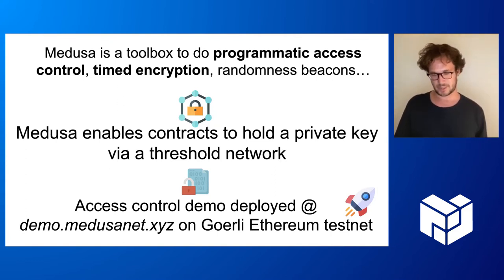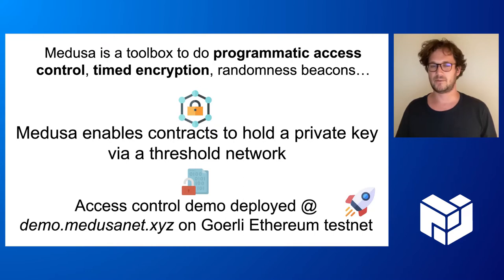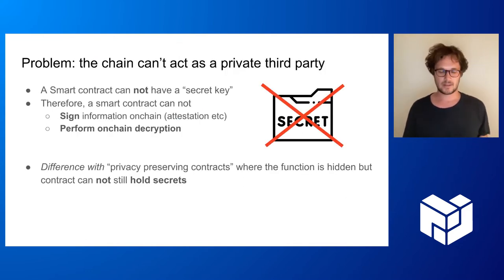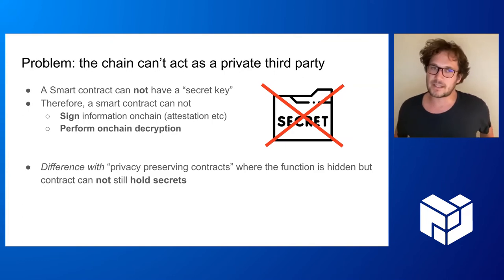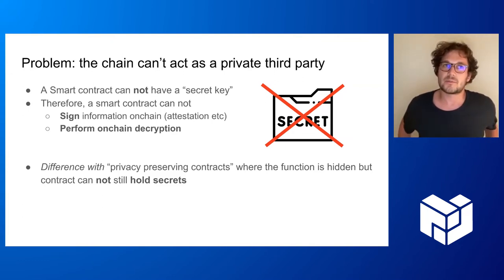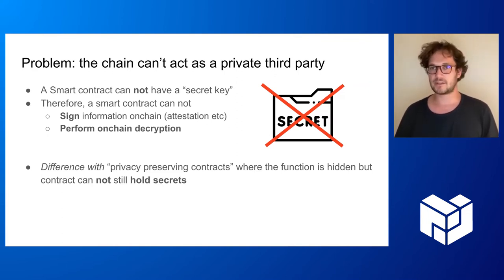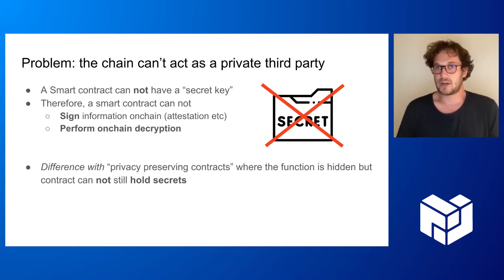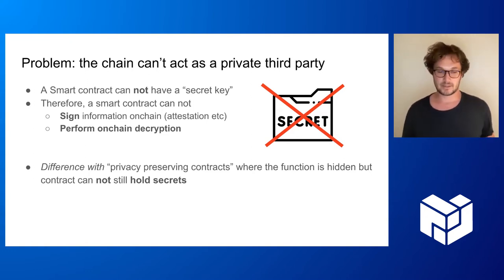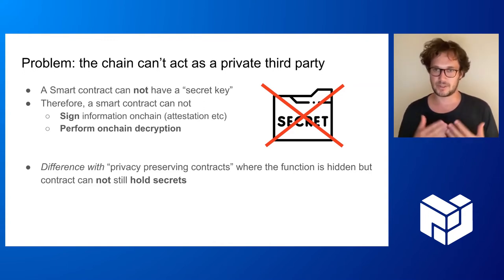We have a demo about access control we're going to showcase later on Görli Ethereum. So let's take a step back — what is the problem exactly? Right now, in terms of private information, there's nothing private on-chain. Everything you send is kind of public. The smart contract acts as a third party, but it cannot hold anything private to its own. It's a completely public state third party, so the smart contract cannot sign or perform any kind of operation involving private information.